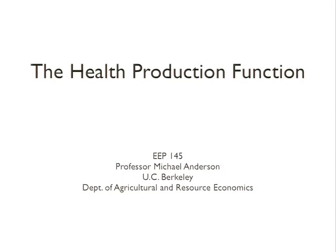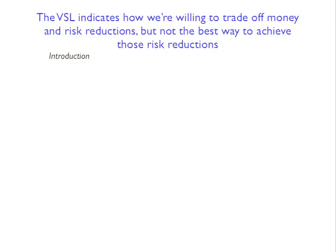So that's it for talking about what the VSL actually is and showing examples of how economists estimate it. The VSL is definitely a very important quantity for policymakers - it indicates how we think people are willing to trade off money for risk reductions. But it doesn't really tell you anything about what the best way to achieve those risk reductions is. This is similar to thinking about a normal good: the VSL is the equivalent of figuring out how much consumers value the good, but it doesn't tell you the cheapest or most effective way to produce it.